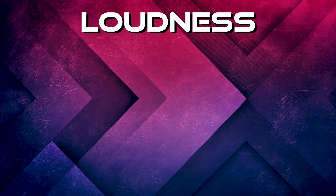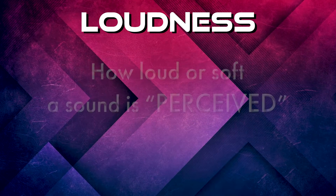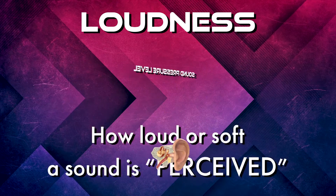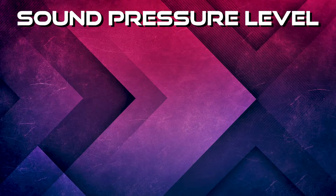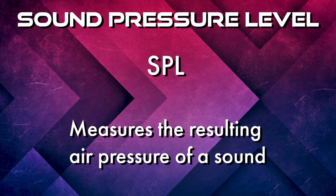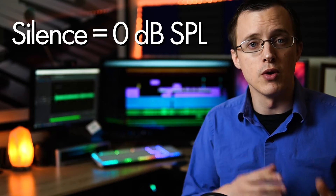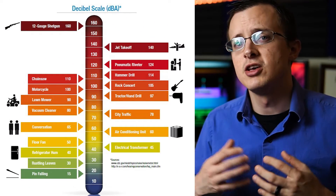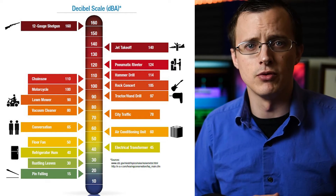Loudness is the psychoacoustical term we use to describe how loud a sound is perceived. We measure loudness using a measurement called sound pressure level, or SPL, which measures the resulting air pressure of a sound. This physical force is interpreted as loud, soft, or somewhere in between when it hits our eardrums. This scale is based on what humans can hear, with complete silence having a value of 0 decibels. Sounds going above 130 decibels SPL can become painful and even harmful to our ears.